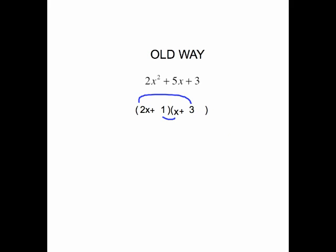If we multiply 1 times x we get 1x. 3 times 2x gives us 6x. If you add 1x and 6x together you get 7x, which is not what I want in the middle. That says I've placed the 1 and the 3 in the wrong place.